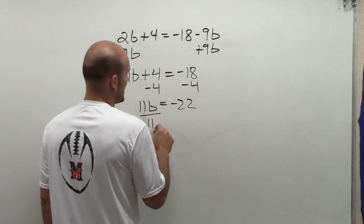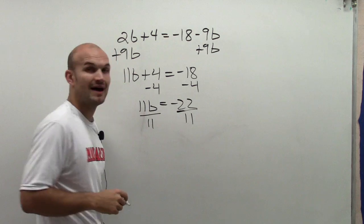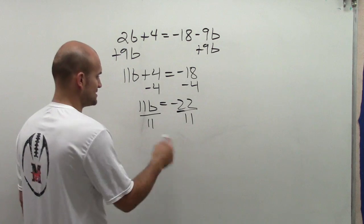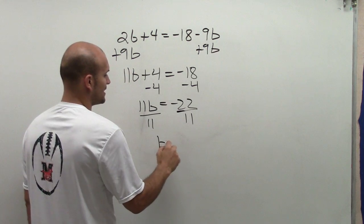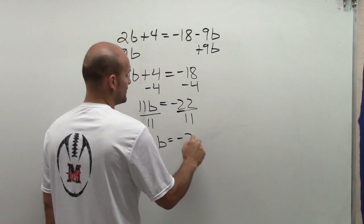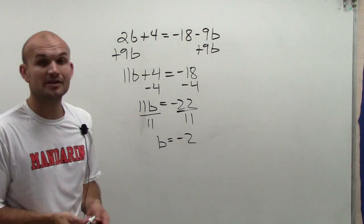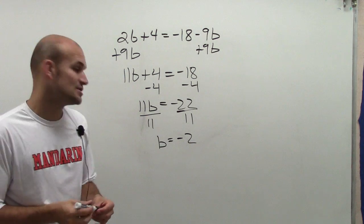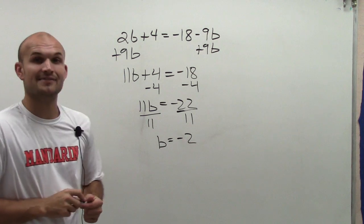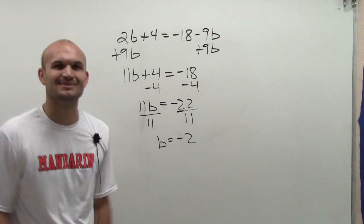Then I undo multiplication by dividing by 11 on both sides, and I get b equals negative 2. So therefore, the value of b that makes this equation true is negative 2. And there you go — that simple. Thanks.